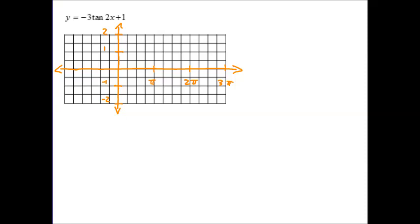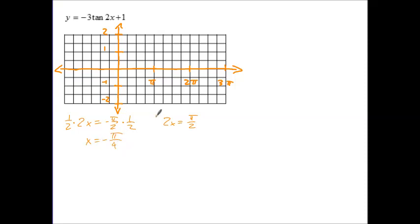On to our last example: y is equal to negative 3 tangent of 2x plus 1. Note that there are no parentheses around the 2x plus 1, which means 2x is the expression we need for our asymptotes. That gives us 2x equal to negative pi over 2, or 2x equal to positive pi over 2. Multiplying both sides by one half, we get x equal to negative pi over 4 and x equal to pi over 4. These are our two asymptotes.